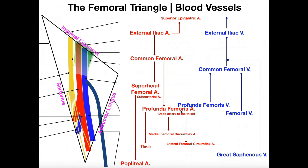The profunda femoris artery also divides into the medial femoral circumflex artery and the lateral femoral circumflex artery, which together supply blood to the head and neck of the femur. The corresponding veins drain back into the profunda femoris vein. The key point about the profunda femoris — the deep artery of the thigh — is that it only serves thigh structures and does not descend past the knee.